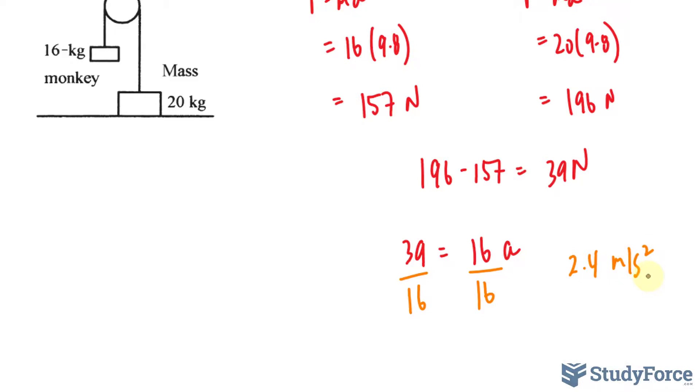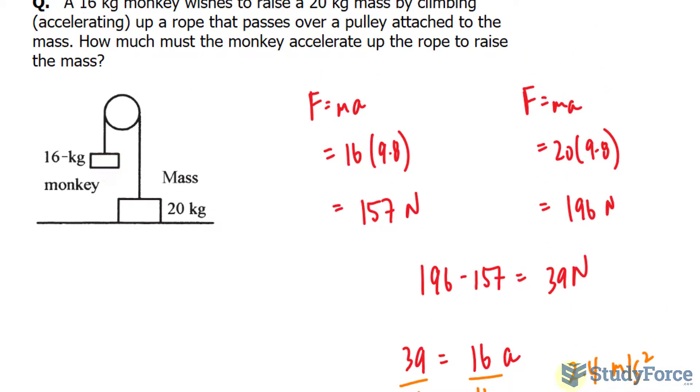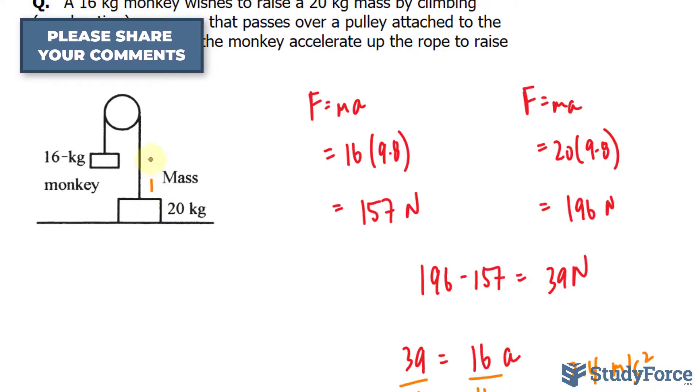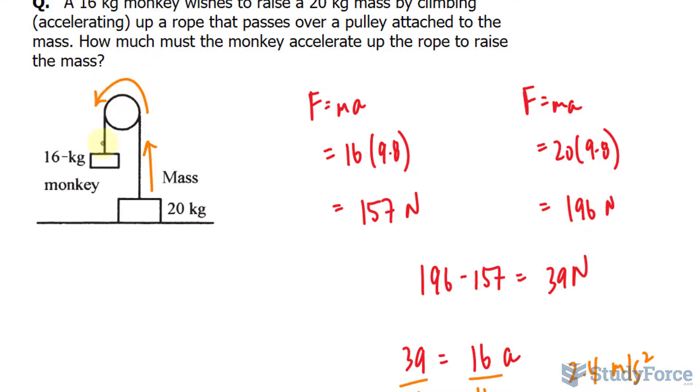By accelerating 2.4 meters per second squared, the two masses will be balanced. They will be at the same level. Any acceleration greater than 2.4 will make this mass go even further up in the direction towards the monkey. So at 2.4, the tensions are balanced, and anything more than 2.4 will take it out of balance and make it go in the favor of the monkey's direction.